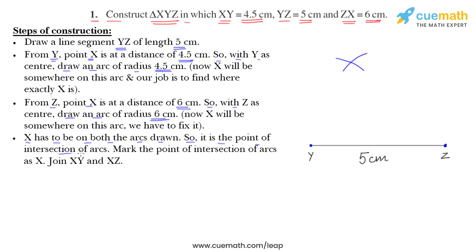So, it is the point of intersection of arcs. That is, this point is point X. Mark the point of intersection of arcs as X. We have marked it as X and join X, Y and X, Z.